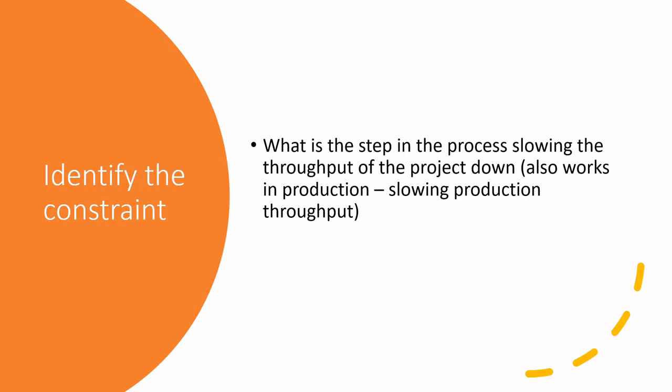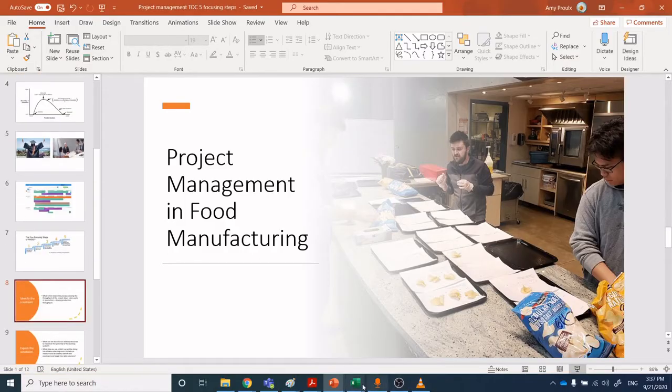First off, we're going to identify the constraint — what is the step in our process that is slowing the throughput of our project down? The same five focusing steps work in manufacturing production as well, so we will revisit this later in the semester. The key question is: what in our process is slowing things down?